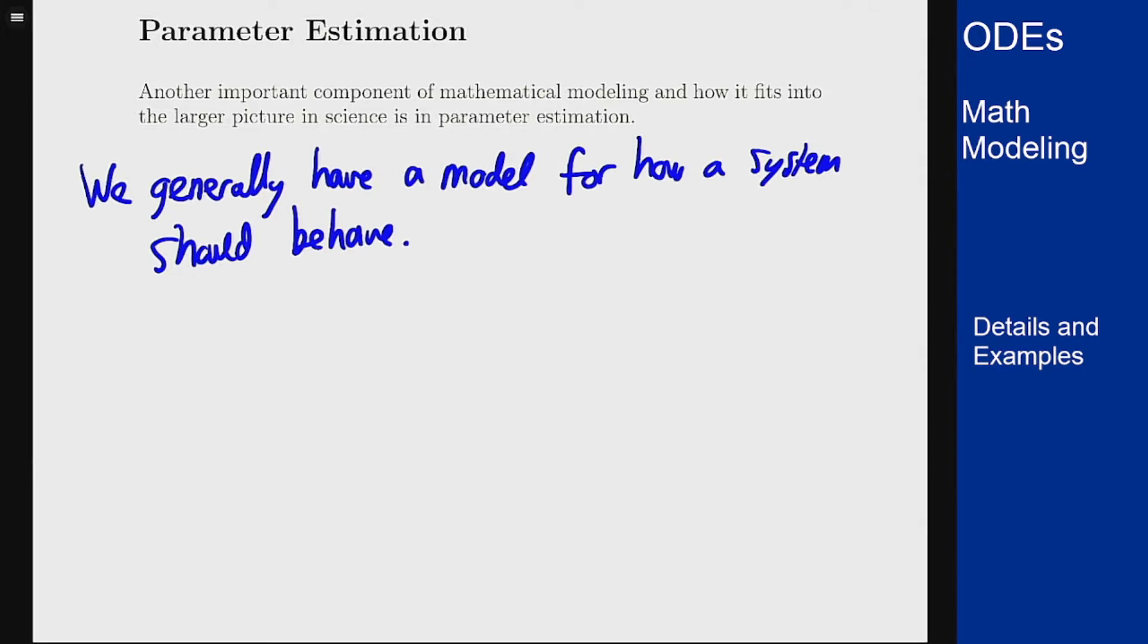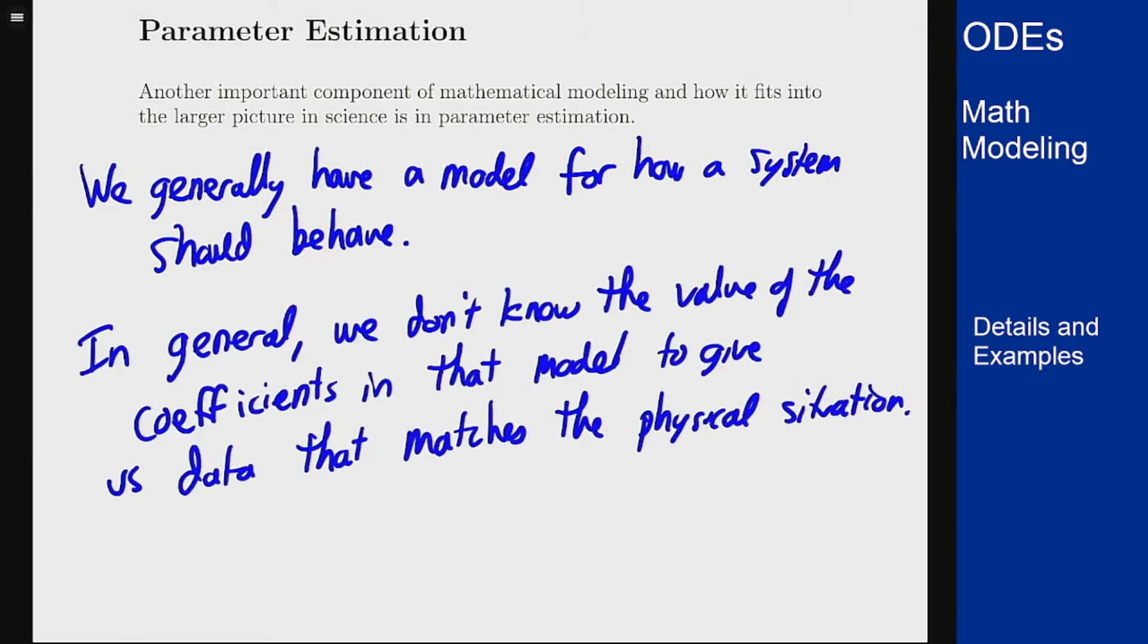A lot of times with modeling we generally have a model for how systems should behave - we know how they should interact, what types of factors are in play. What we don't usually know is what the coefficients should be in that model to get the result that we actually see from the physical situation.